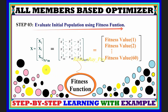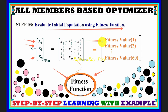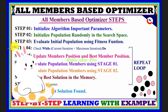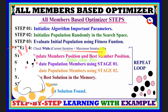Using the cost function, or objective function, we calculate the fitness value for each agent in the current population. This gives us the fitness value for the first agent, the second agent, and so on up to the 60th agent. After that, we check whether the current iteration is less than the maximum iteration.